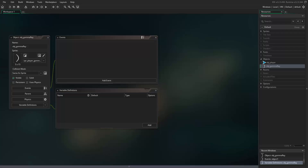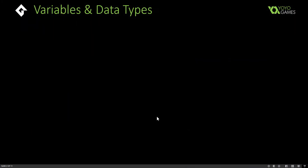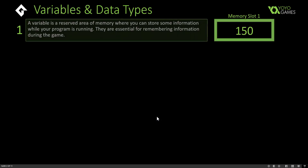A variable is essentially a reserved area of memory where you can store some information while your program or game is running. They are essential for remembering information during the game. You can think of it as a slot — memory slot one stores the value 150, for example. That value could represent anything: score, lives, an angle — whatever you need.